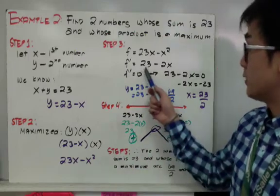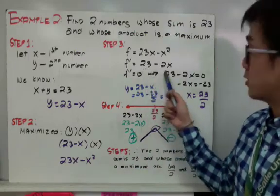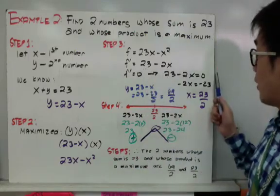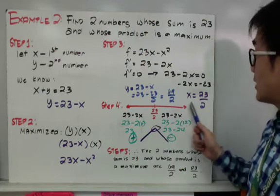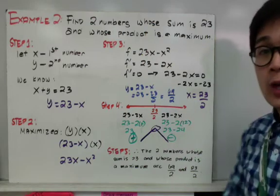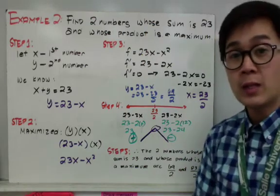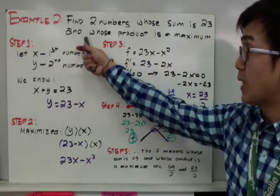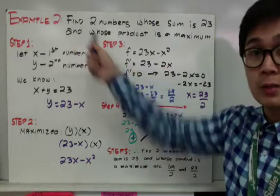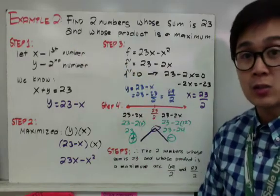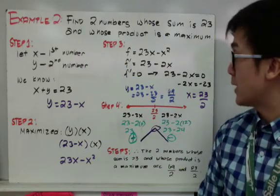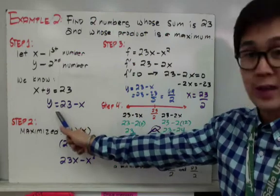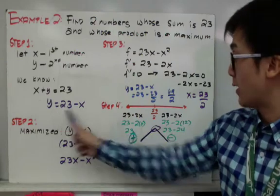Yung step number 3 is to find its critical number by finding the derivative of step number 2 and setting it to zero. Yung first derivative nya is 23 minus 2x. Set it to zero, therefore x is equal to 23 over 2. Nakuha na natin yung first number. Kailangan lang natin yung second number, so use this equation to find the value of y.